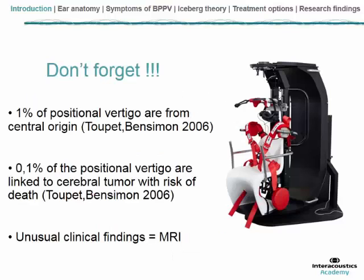Never forget that about 1% of positional vertigo cases are not benign but could be of central origin, and about 0.1% could be linked to tumours. So if the patient presents some unusual clinical findings such as neurological impairment, even if very little, or unusual headache, don't hesitate to perform MRI.